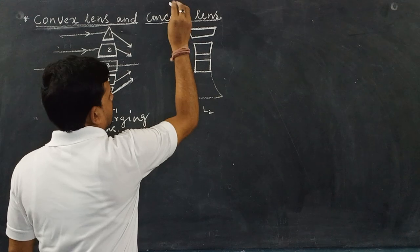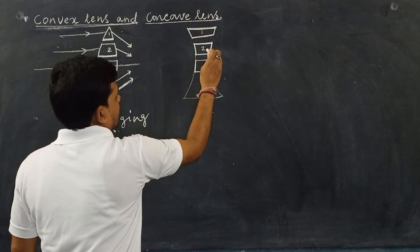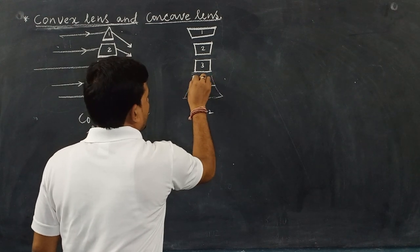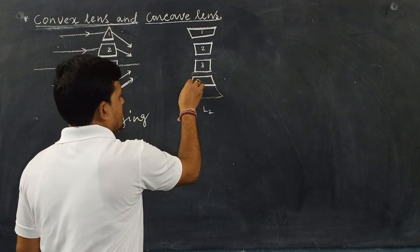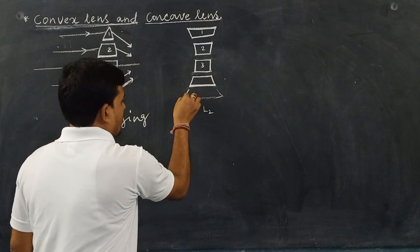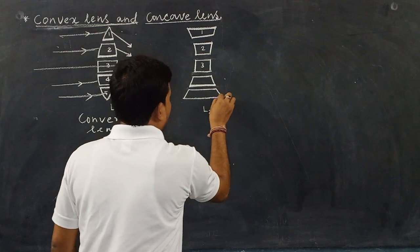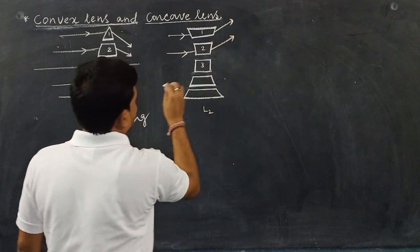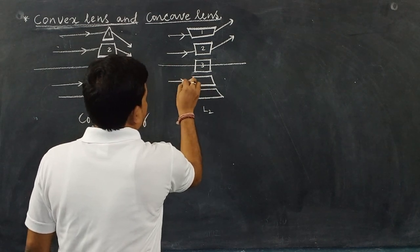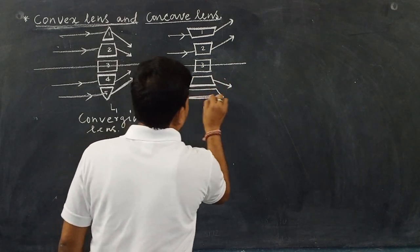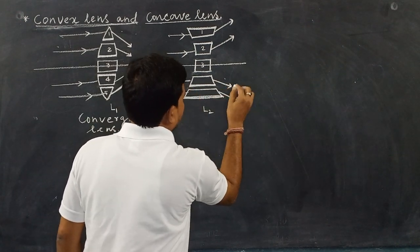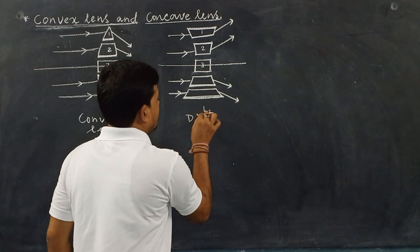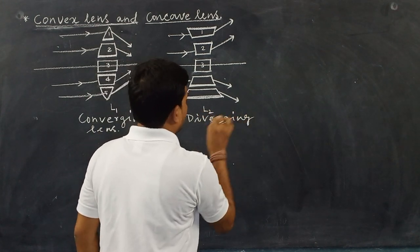The bold line is the base — prism one, prism two, prism three, prism four — the base of each prism faces towards the outer, away from the center. As a result, when the light ray passes through the prism, the light ray bends away after refraction. That is why a diverging operation is found after refraction of the light rays from the concave lens. That is why a concave lens is called a diverging lens.